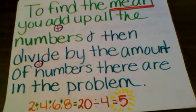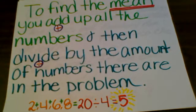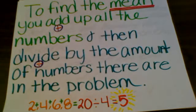To find the mean, what you need to do is you add up all the numbers that you have in the line of numbers. And then you divide by the amount of numbers that you just added up.